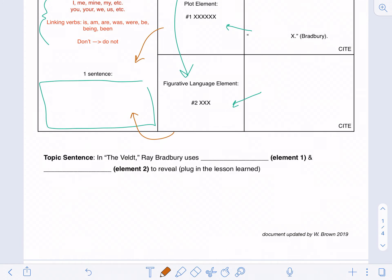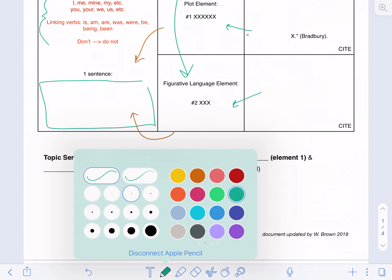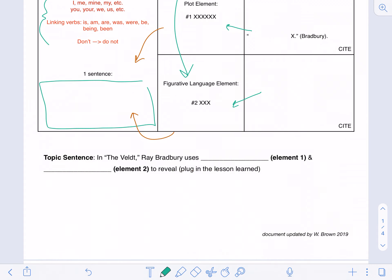The lesson learned is the second half of the topic sentence. So your topic sentence would say, 'In The Veldt, Ray Bradbury uses imagery and characterization to reveal how...' and then this is where you plug in your lesson learned. Whatever you've just written up in this box with the star, you plug that in as the last little chunk of your topic sentence.